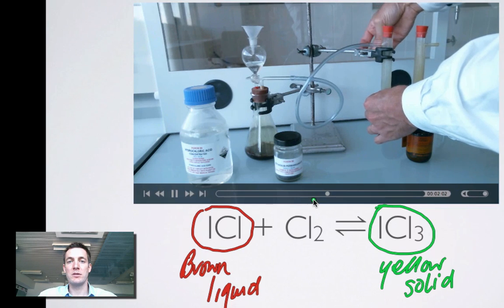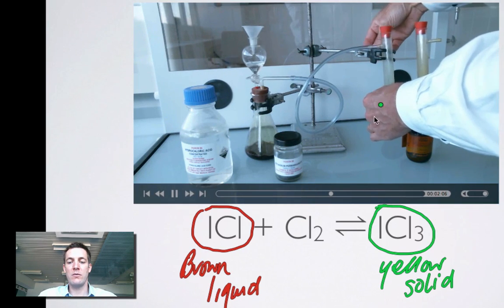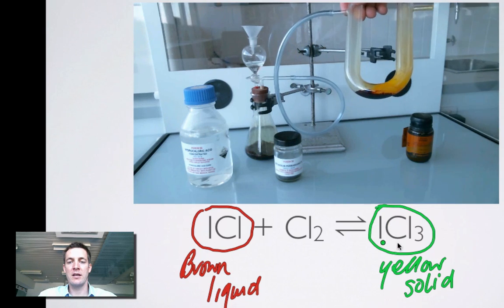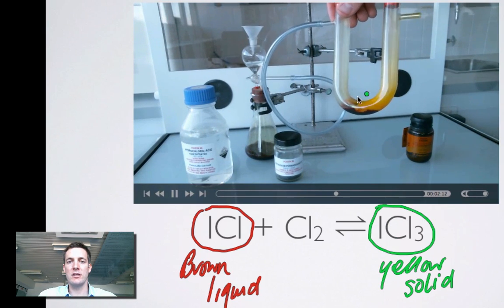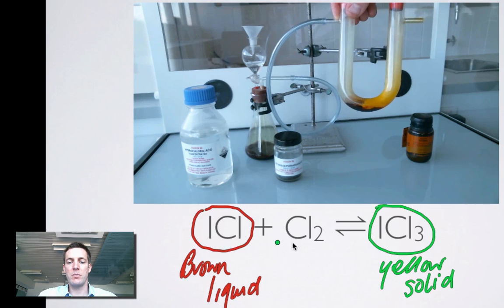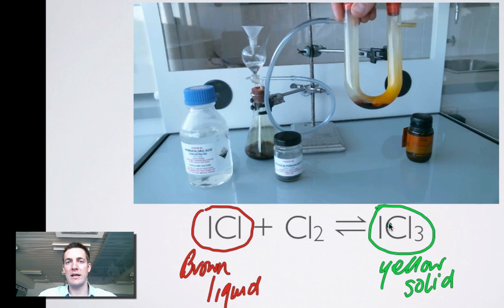So we're adding chlorine to this system. And what we should be able to see here as we do that as the chlorine comes through is that we are starting to form again this yellow solid. So there you can see we've got brown liquid still but this yellow solid is starting to form again. So by adding chlorine, by adding a reactant, we're pushing the equilibrium over to the right hand side.